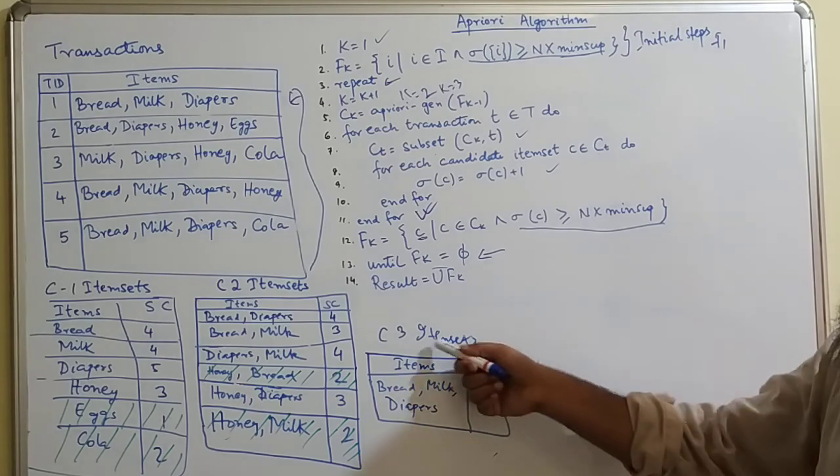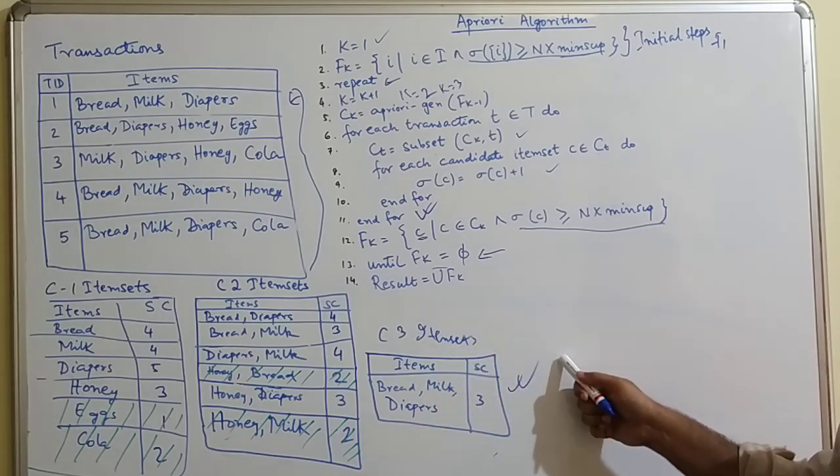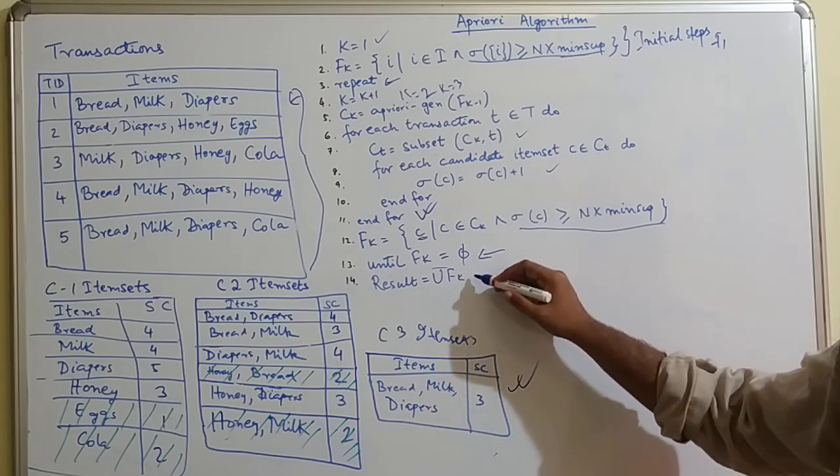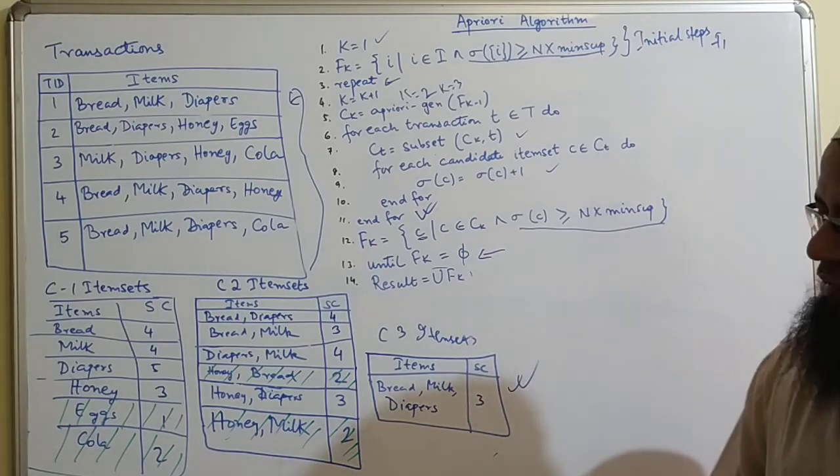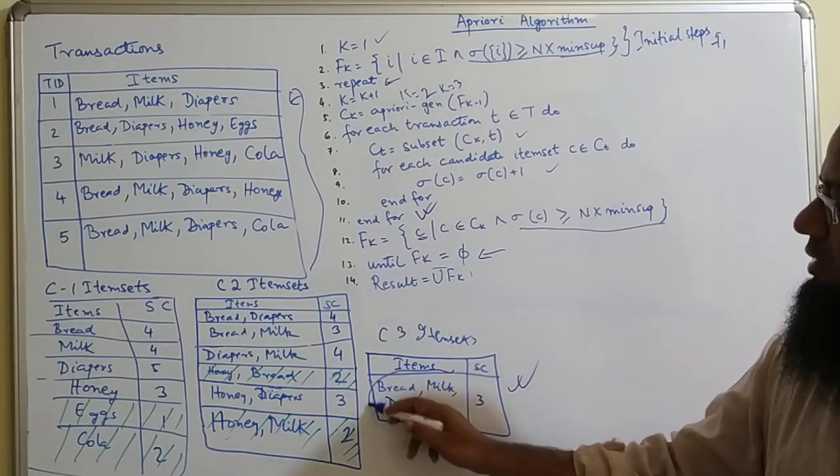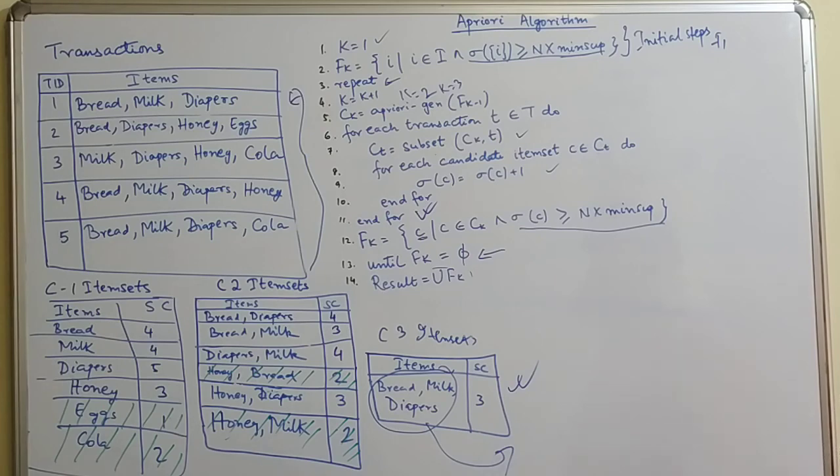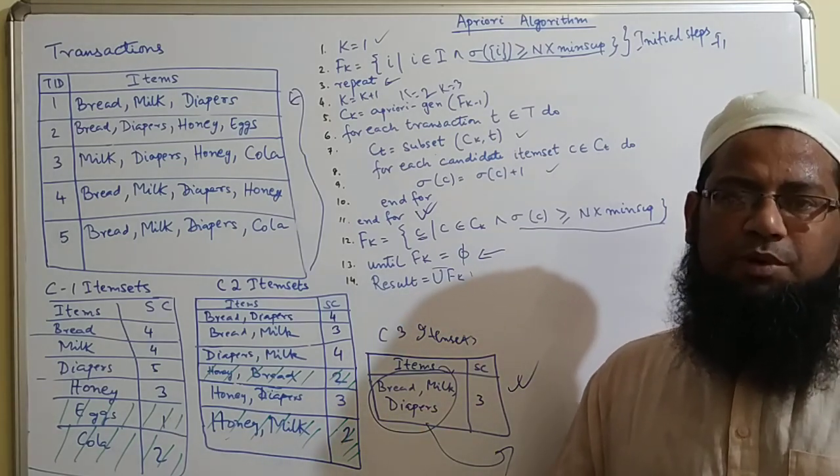After the c3 item set, we will not be able to get f3. Then you have to stop the loop, and your result will be the value that you got in c3 item set. That's all for this Apriori algorithm. Bye bye, thank you.